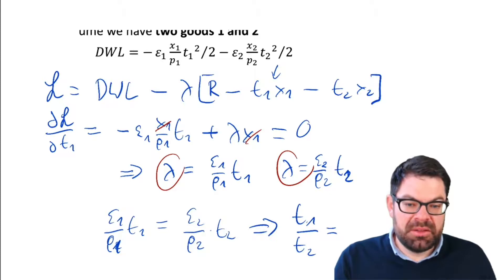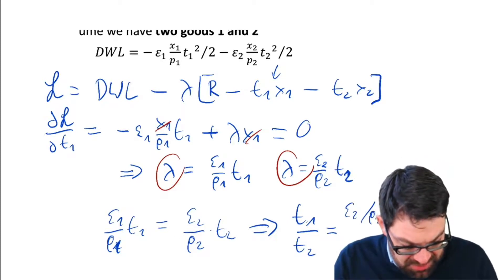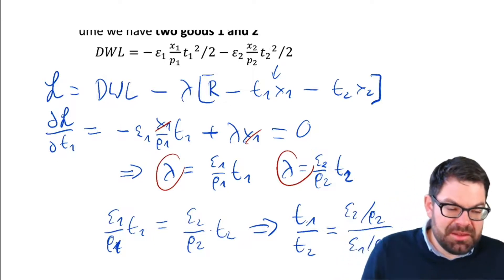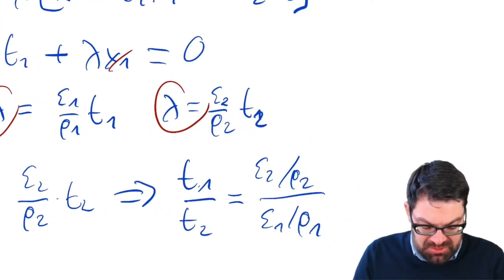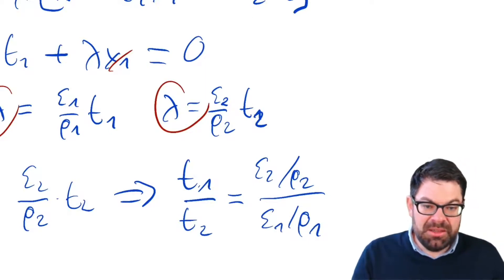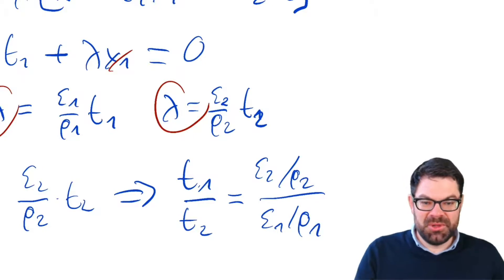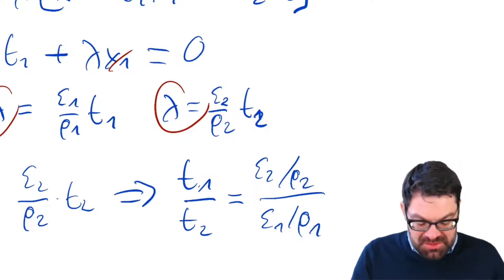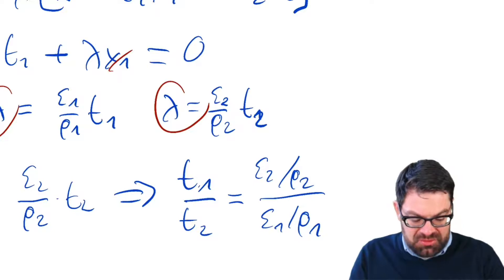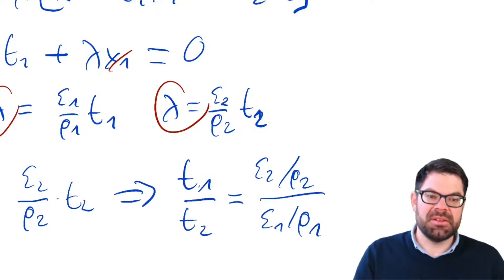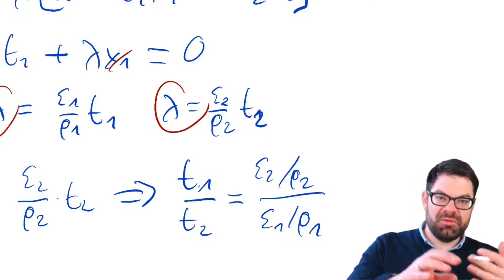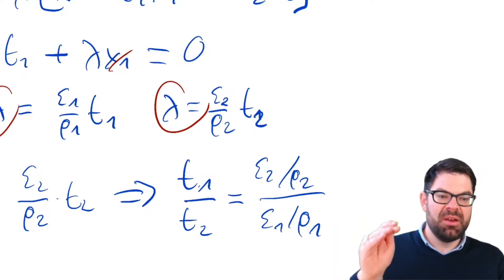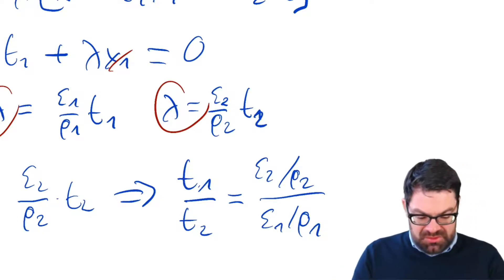On the right-hand side we have ε₂ divided by p₂ over ε₁ divided by p₁. This is a very important formula — one of the classics of public economics. It tells us: if you have two goods and want to levy a different tax on each, what ratio of taxes minimizes the deadweight loss for a given level of revenue?